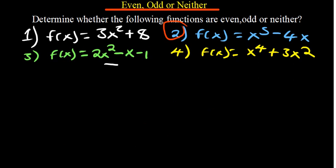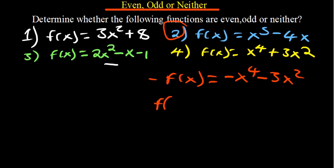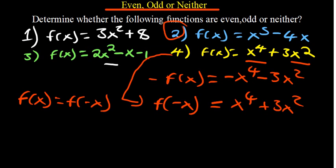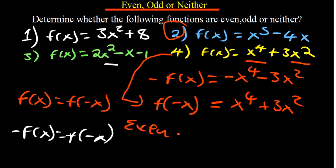For question four, we find -f(x) by multiplying the whole function by -1: -f(x) = -x⁴ + 3x². Then f(-x) is found by substituting -x: raising a negative number to an even power gives a positive, so f(-x) = x⁴ - 3x². Since f(x) = f(-x), this function is even. Checking for odd: -f(x) ≠ f(-x), so it is not odd.